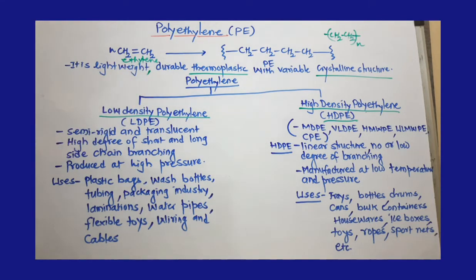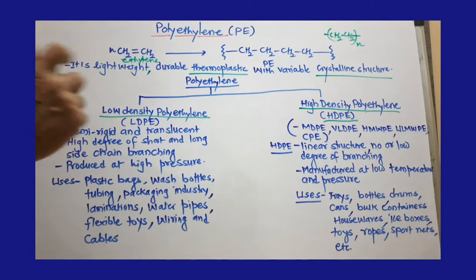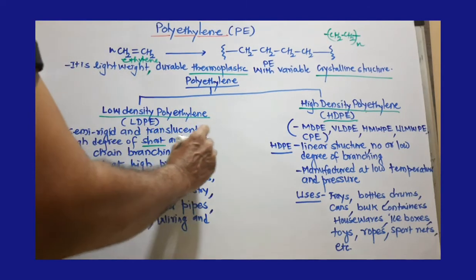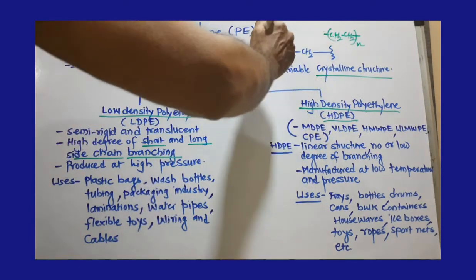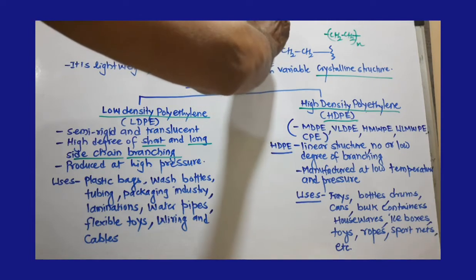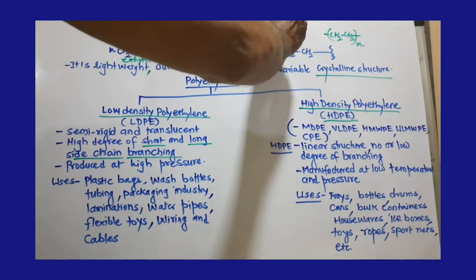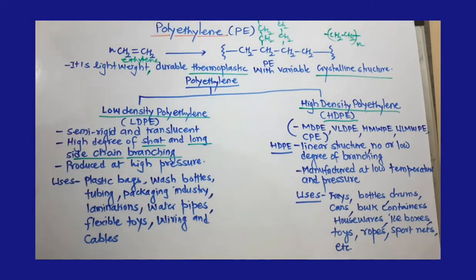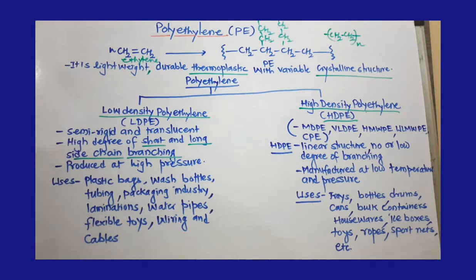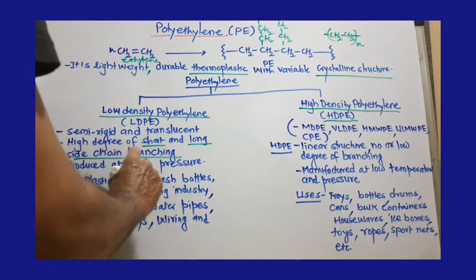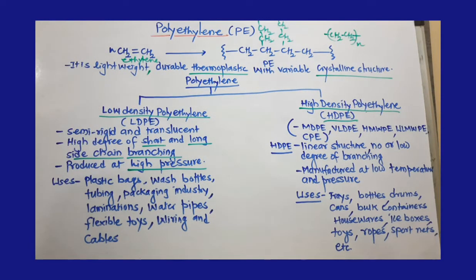Low density polyethylene is semi-rigid and translucent — you know, like plastic bags. It has a high degree of short and long side chain branching, so it is not linear. You can see branches of CH2-CH2 groups of different sizes attached along the main chain. LDPE is produced at high pressure.